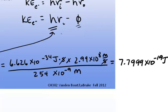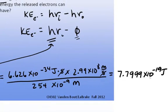We have the work function and should just be able to subtract it, but the work function is per mole of electrons. What we've just calculated is the energy of one photon, and one photon will eject one electron. So we need to express the work function in terms of per individual electron, not per mole of electrons.